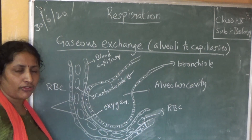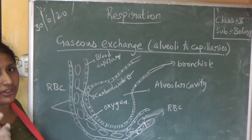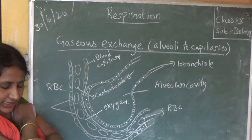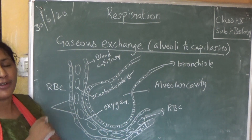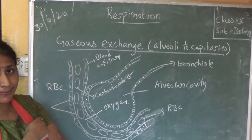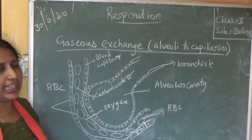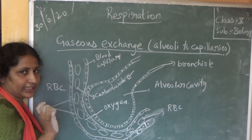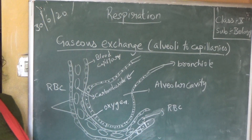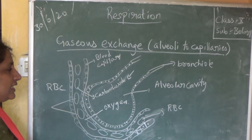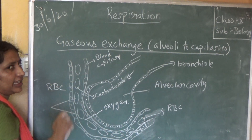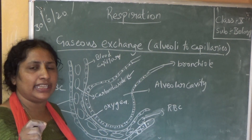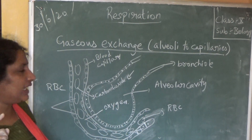Looking at the structure of the alveoli: they are very thin, made up of a single layer. The cell membrane is made up of a single layer of cells. So alveoli are single-membrane structures. They are surrounded by blood capillaries, and even the blood capillaries are also single membrane — their cell membrane is made up of a single layer of cells.